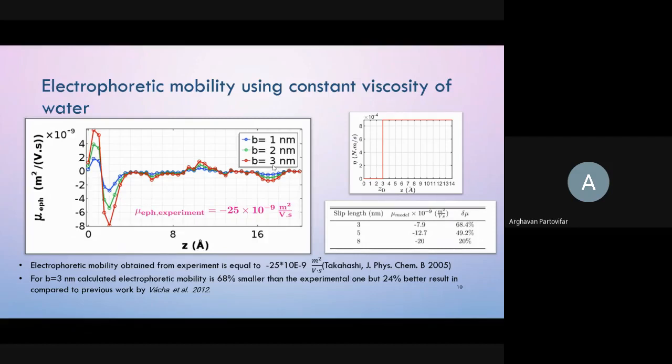Takahashi obtained the electrophoretic mobility of air bubble from experiment as minus 25 times 10 to the power minus nine meter squared over volt second. Assuming that three nanometers is a reasonable choice for slip length, the best fit value of electrophoresis mobility predicted by this model is equal to minus eight times 10 to the power minus nine. Its magnitude is 68 percent smaller than the experimental one, but it is 25 percent better than past similar works in the literature.